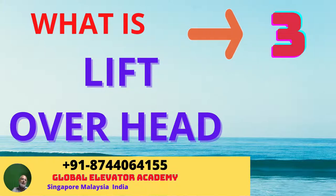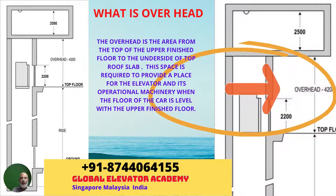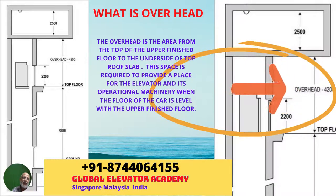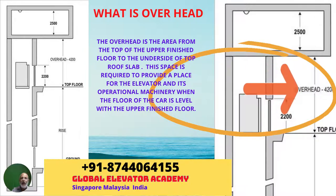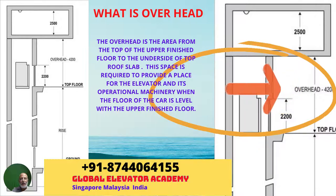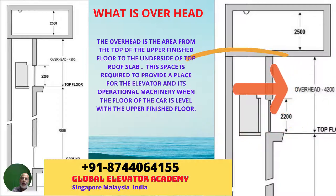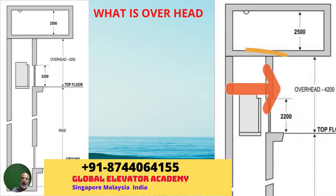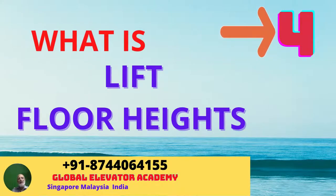Now we'll talk about one of the most confusing points, which is overhead. Basically, overhead is a vertical distance between the top floor landing to the underside of the machine room slab. When we say top floor, we should take the finished floor level from there. This overhead is a clear distance from the top floor, and is a very important factor for installing a lift. Whenever you go to site, it must be measured very accurately.